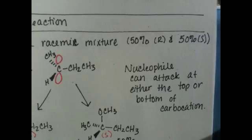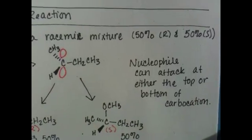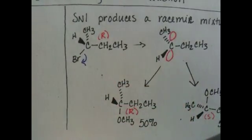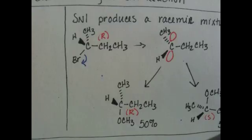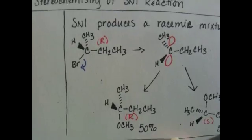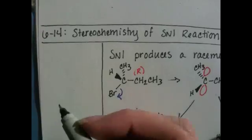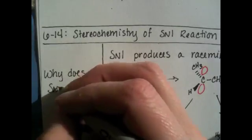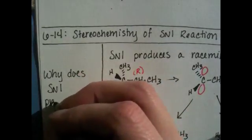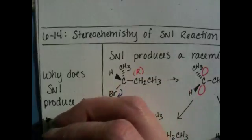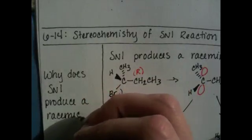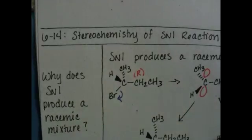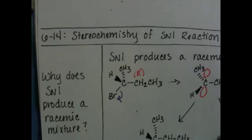That's it for this section on stereochemistry. Your study question for this section: Why does SN1 produce a racemic mixture of products? I don't think you need to write a summary for this section because it's so short.